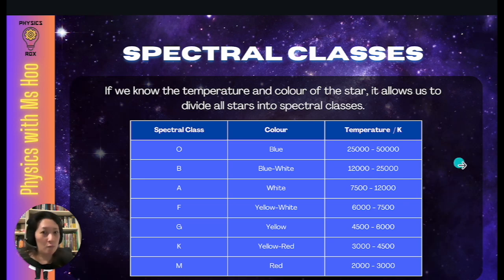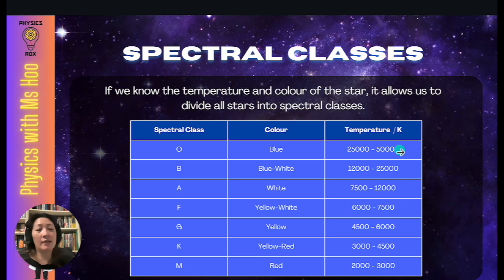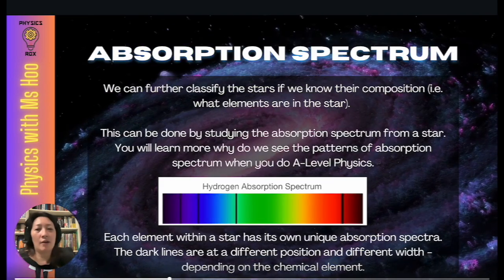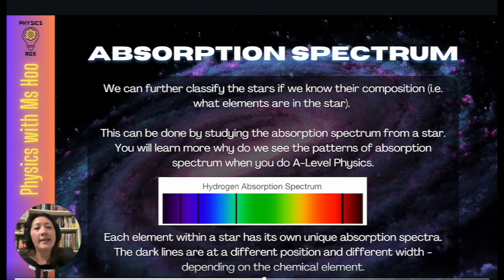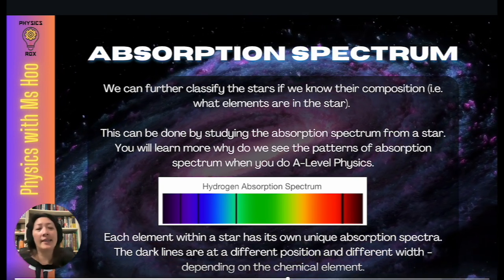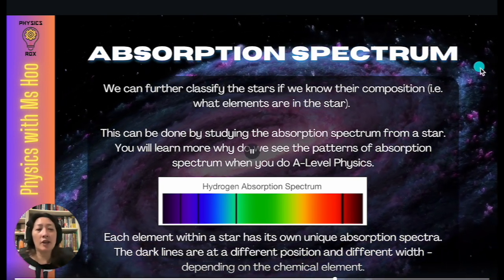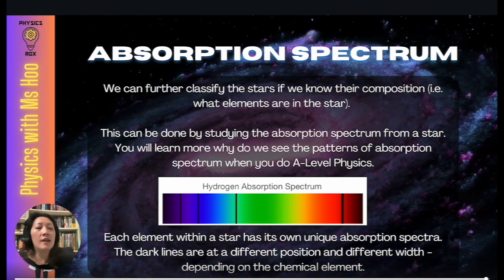Do we need to memorize all these spectral classes? No. You just need to know that there are different spectral classes of stars and that classification is based on their color and temperature. We can further classify stars if we know their composition, which can be done by studying the absorption spectrum of a star. You will learn more about why we see absorption spectrum patterns when you do A-level physics.